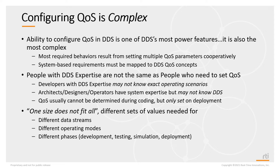For the life cycle of a system — development, testing, simulating part of the system, and deployment — the QoS values you might need to use might be different during each of these phases. The same system may also be deployed on different networks and even different hardware, which perform differently, and with different QoS values you can get your applications to run optimally.